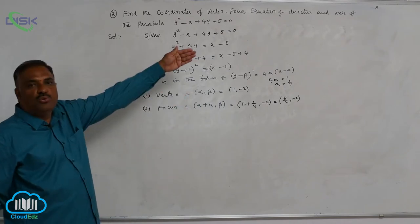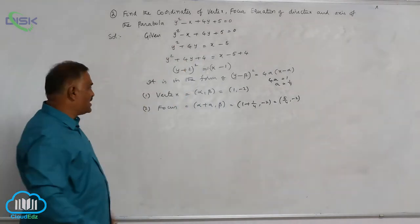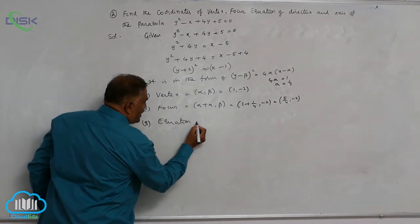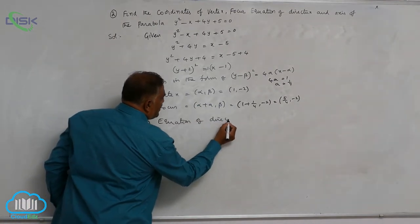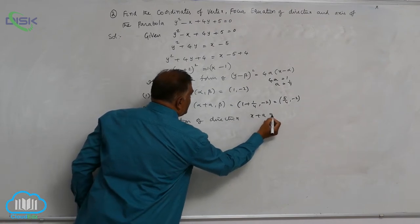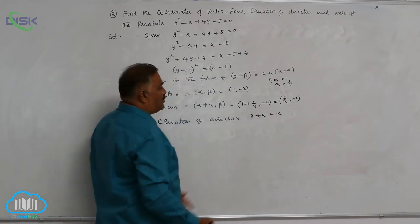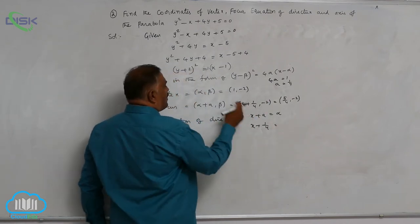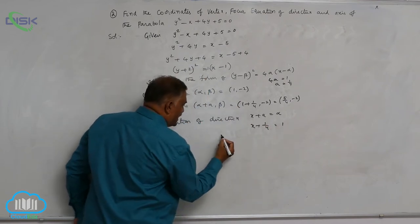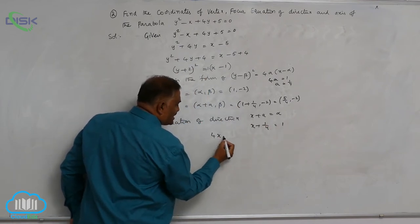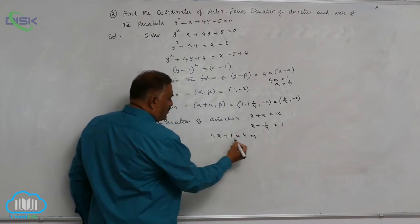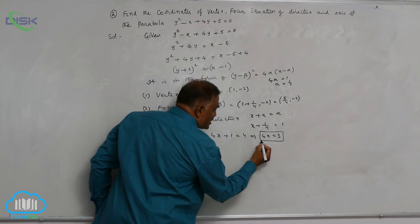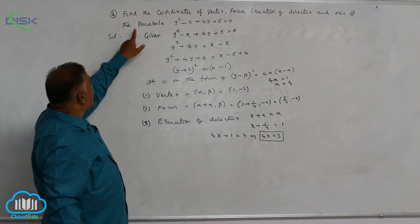Then comes equation of directrix number 3. Equation of directrix is given by the formula x plus a is equal to alpha. Now x plus a value 1 by 4 is equal to alpha, that is 1. That is x, 4x plus 1 is equal to 4, or 4x is equal to 3. This is the equation of directrix.